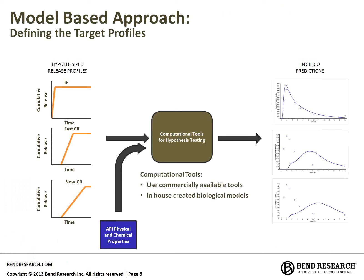When we have multiple technology options available and have identified possible target profiles, we can use computational tools for hypothesis testing — an initial screening to determine if proposed profiles have a chance of achieving the desired goal. We are tool agnostic and happy to use commercially available tools. If there's anything required, we will create biological models if there are missing physics or specialized requirements.